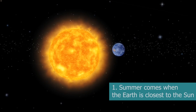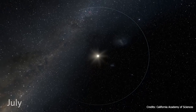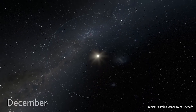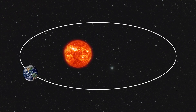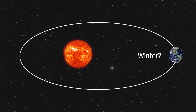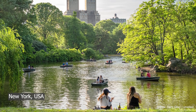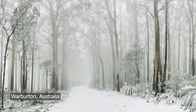Summer comes when the Earth is closest to the sun. Many people believe that the seasons change because of the Earth's elliptical orbit. Supposedly, when our planet gets close to the sun, we experience summer, and when it's far from the sun, winter comes. These people probably forget that when it's summer in New York, it's winter in Australia.